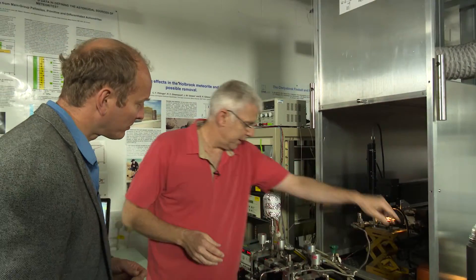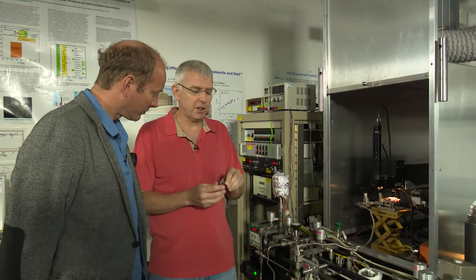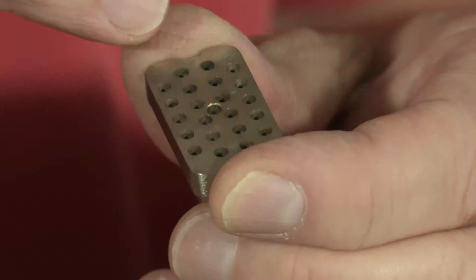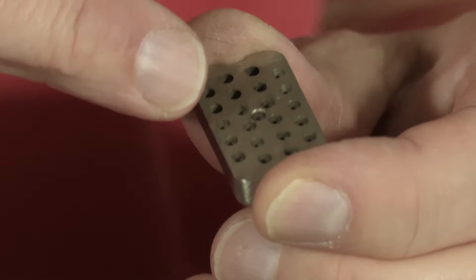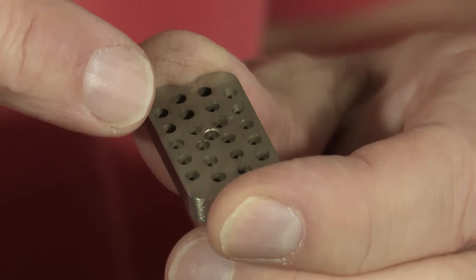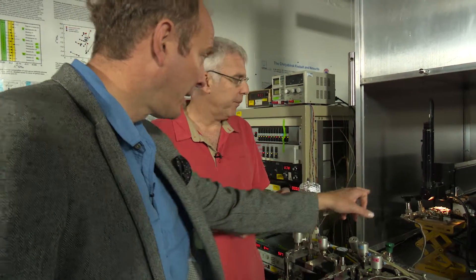So once I've got my sort of powders of my sample, what happens next? Well, if possible, we'd like to crush them up. But chips can also go in and the samples are loaded along with a number of standards into a sample tray like this. And we can load 15, 16, 17 different samples depending on how many standards we think we might need into a tray. And that's loaded in here then, is it?